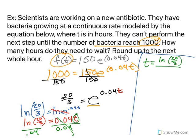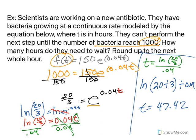So t equals the natural log of 20 over 3 divided by 0.04. In your calculator you need to type in the natural log, parentheses 20 divided by 3, end parentheses, and then divide by 0.04. If you do that you should get your answer of 47.42.